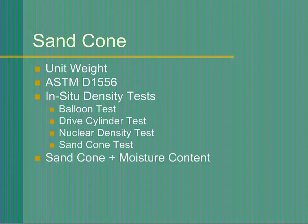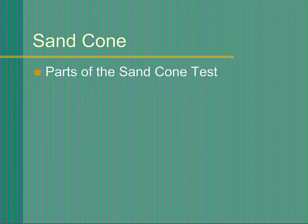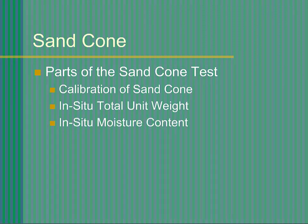The Sandcone is almost always combined with the moisture content measurement. Using these two tests combined, we can compute both the total unit weight and the dry unit weight of the in-situ soil. The Sandcone test actually consists of four separate parts: calibration of the Sandcone, determination of the in-situ total unit weight, measurement of the in-situ moisture content, and computation of the in-situ dry unit weight.